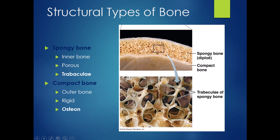Spongy bone is generally the inner portion of bones and is very porous. All of those empty spaces get filled with marrow. The spongy bone is organized by what are called trabeculae — pieces of bone that make a honeycomb structure. Compact bone, by contrast, is smoother looking and very rigid, forming the outer portions of the bones. Its organizing structure is the osteon, which is those tree-ring-like structures you saw when we studied osseous tissue.